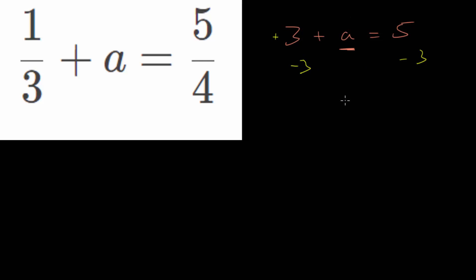And again, 3 minus 3, that's 0. So we just have a on the left-hand side. And 5 minus 3 is 2. And this right here will be the final answer for this example. So that's our general strategy.